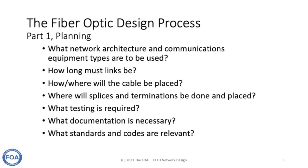The place to start is always: what are the communication needs? What kind of network architecture and communication equipment types do you need? The geographic location of the network is also very important — that tells you how long the links must be and how and where the cable will be placed. When you know where the cable has to go, you often know whether it needs to be installed aerial, underground, or even underwater. You have to know where you're going to locate splices and terminations, so you can get all the drops in the network.